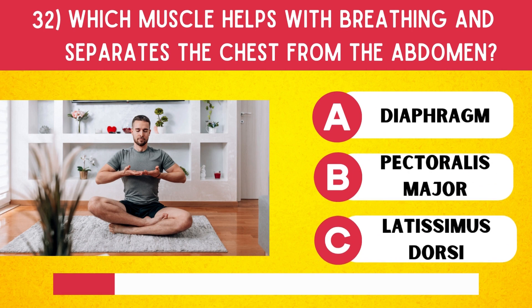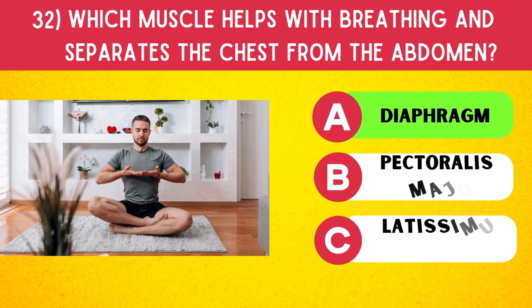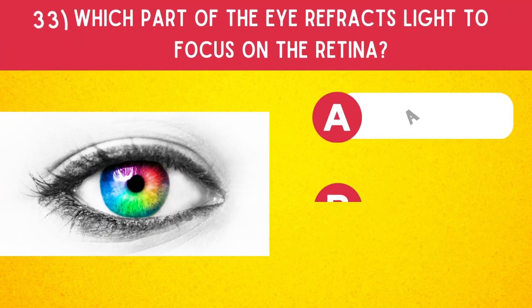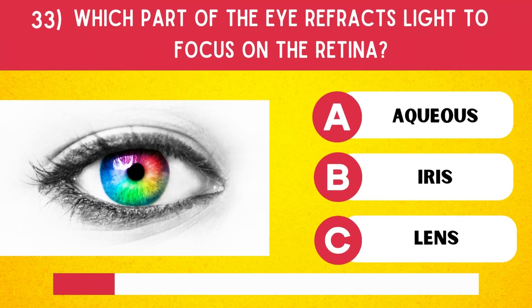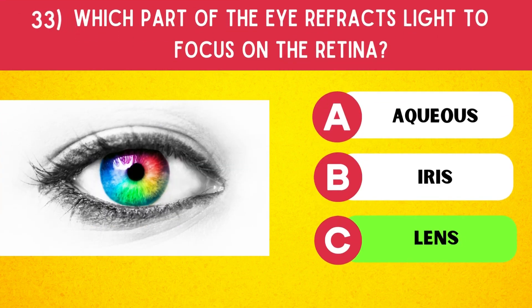Which muscle helps with breathing and separates the chest from the abdomen? Diaphragm. Which part of the eye refracts light to focus on the retina? Lens.